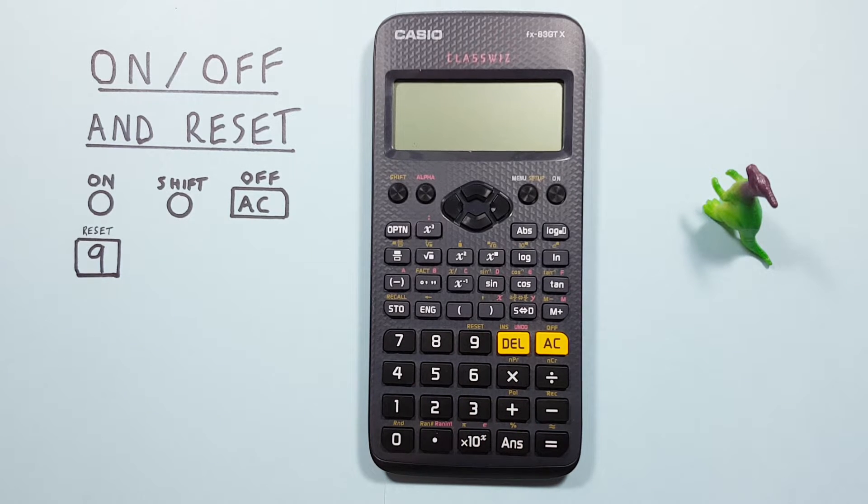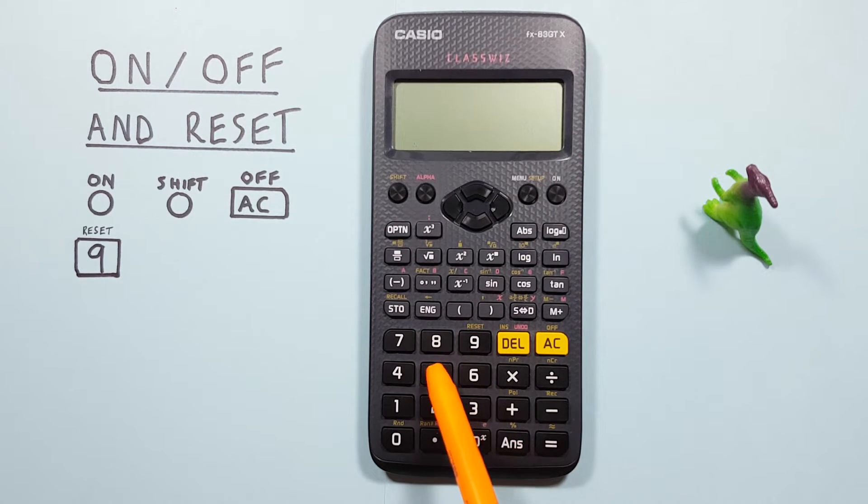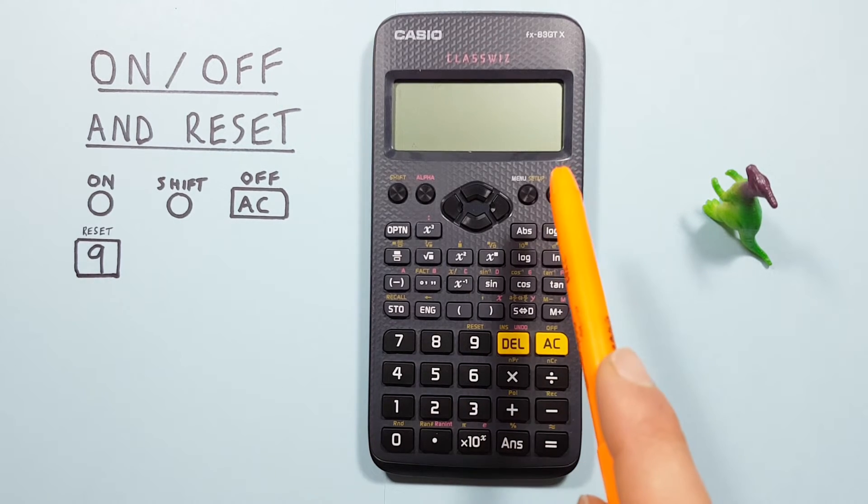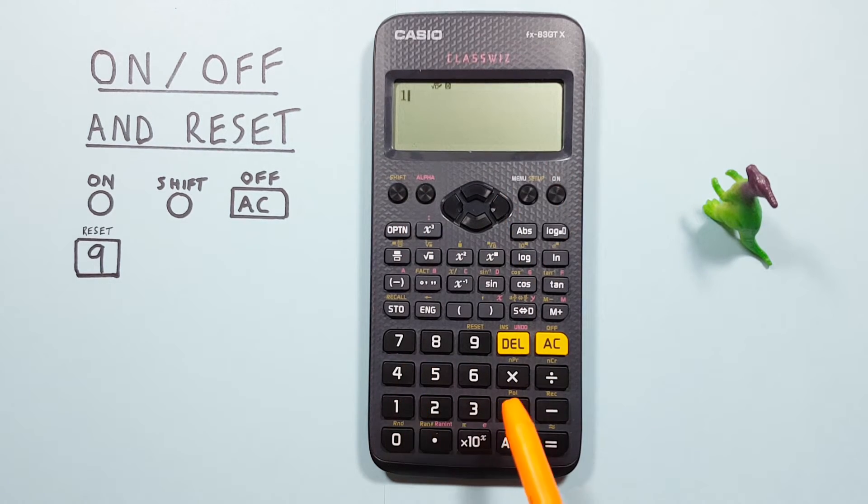To start, if our calculator is OFF, our screen is blank, and when we press the keys, nothing happens. If we want to turn it ON, we simply press the ON button. We see the screen turn ON, and we can now do our calculations.